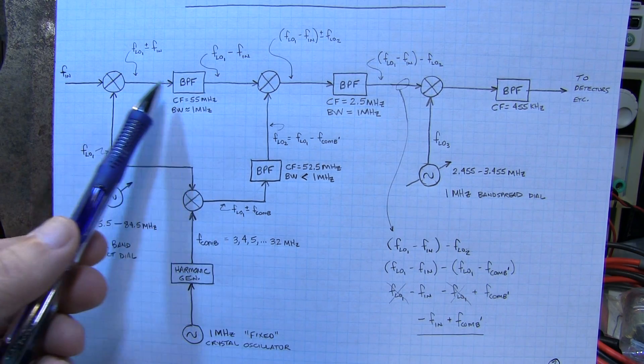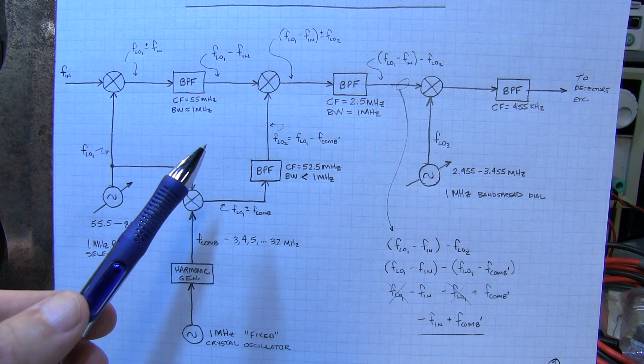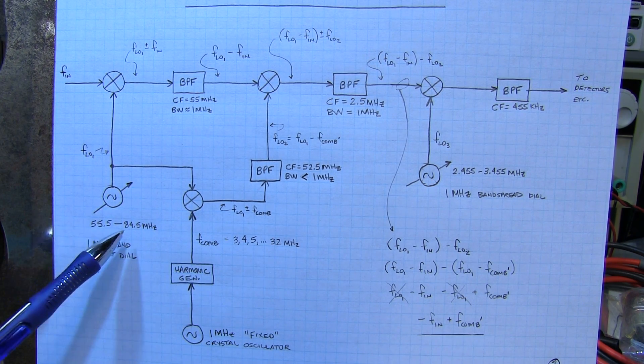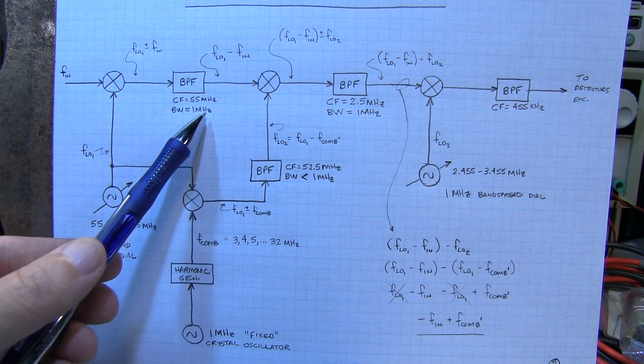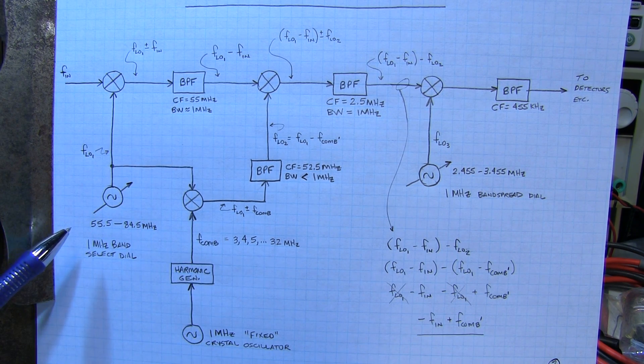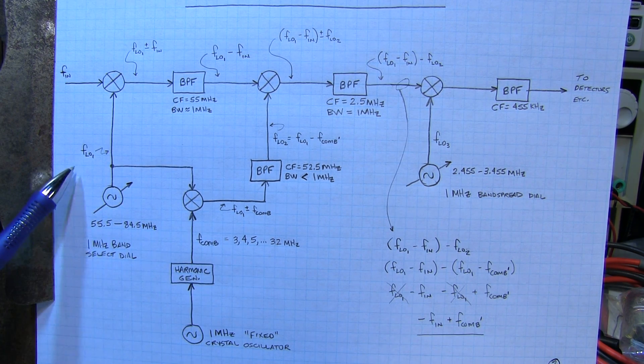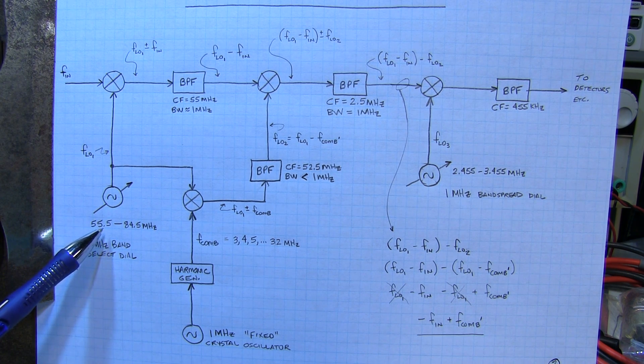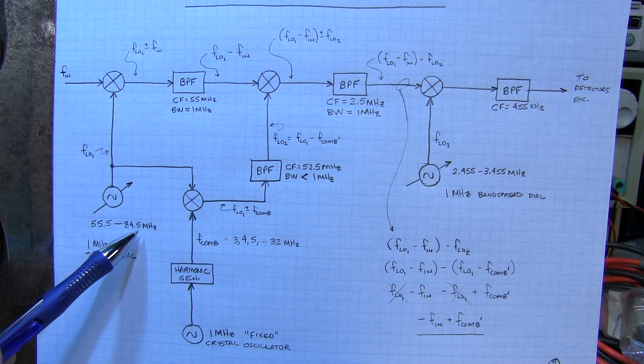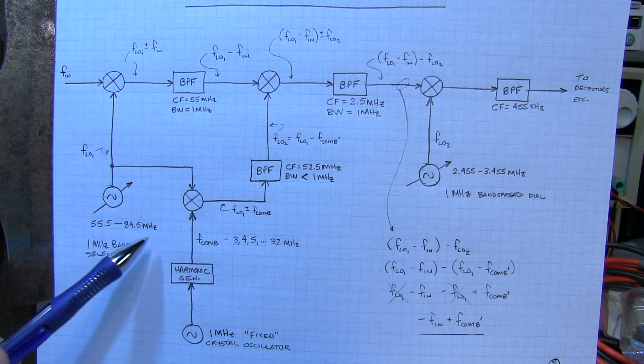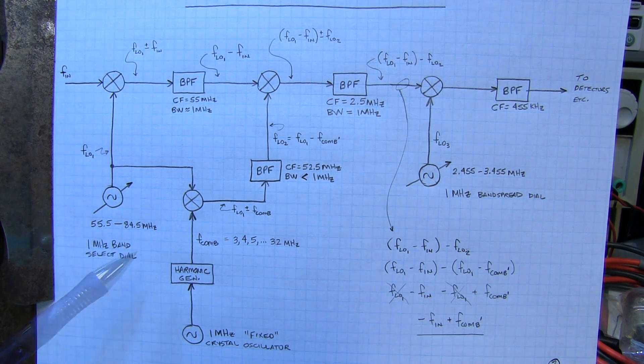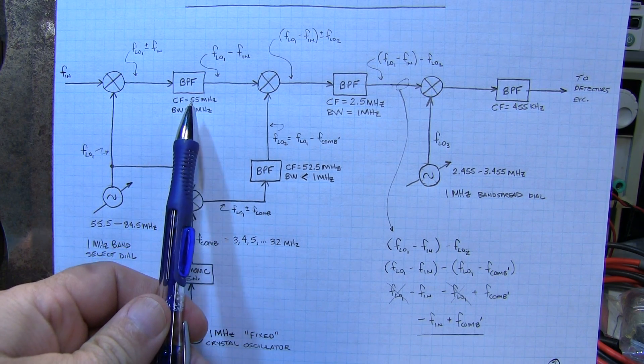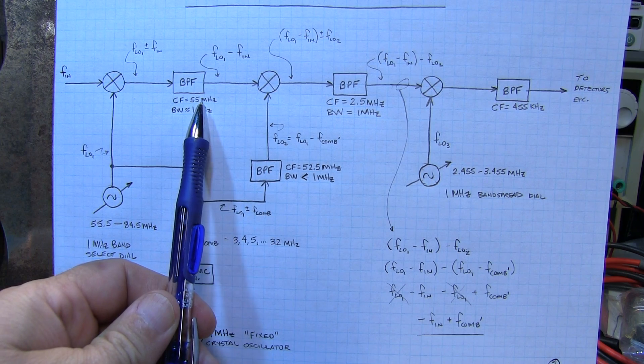Now of course this is no different from any other superheterodyne receiver. I should note also that the numbers that I've indicated here for frequencies are the numbers that are specific to this Yaesu FRG7. So we can see for example that the first local oscillator is tunable from 55.5 MHz up to 84.5 MHz or over about a 29 MHz frequency range. So the first IF frequency in the Yaesu FRG7 is centered at 55 MHz.